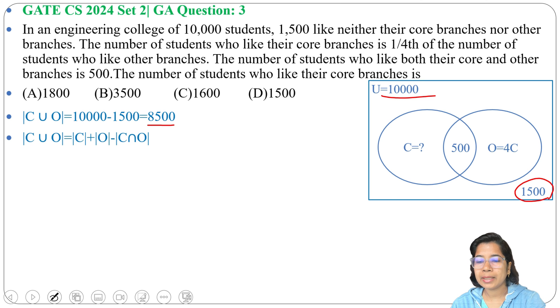Now we know the union formula: C plus O minus C intersection O, and we know this value is 500, and O equals to 4C. So you can write C union O equals to C cardinality plus 4C cardinality minus 500.